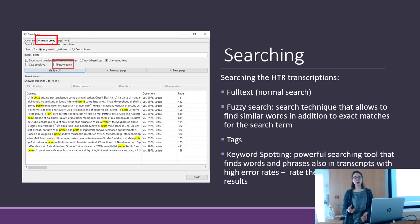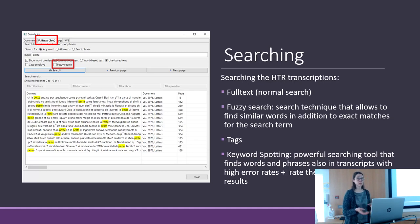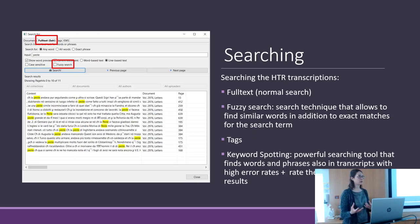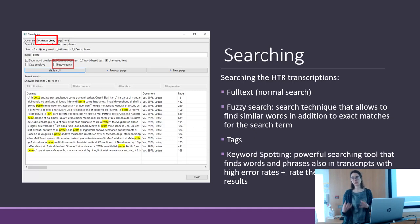If the HTR model is only 95% correct, probably some words are missing. The Fuzzy search helps find also similar words that could be 'Peste' but aren't transcribed exactly as 'Peste' by the HTR tool.